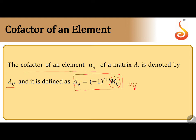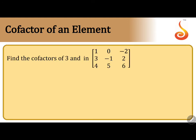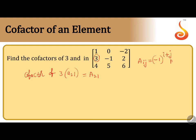Now let us directly solve one small problem: find the cofactor of 3. The element 3 is present in the second row and first column. This is denoted by capital A21. By definition, Aij equals minus 1 to the power i plus j into Mij. So this is minus 1 to the power 2 plus 1, into M21. Minus 1 to the power 3 gives minus, since 3 is an odd number.